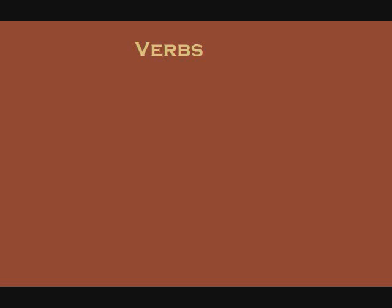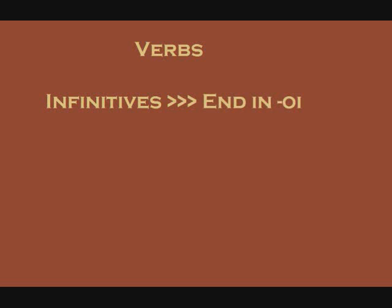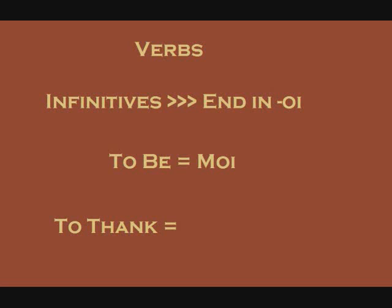The most basic form of the verb — the form you'll find in the dictionary — is called the infinitive. This is the TO DO form of the verb. In DANGEN NIERA, infinitives all end in OI. For example, the verb TO BE is MOI, and the verb TO THANK is KALATULANOI.